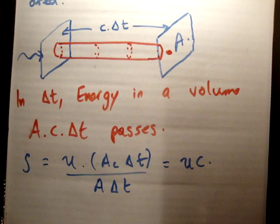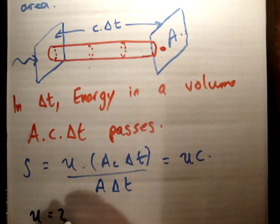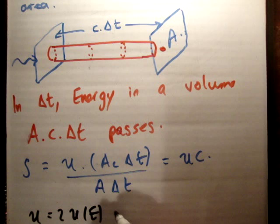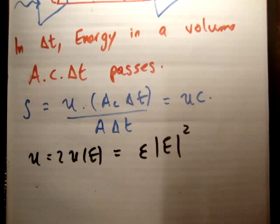Now the next thing is, through a small bit of study, you'll find the following. Now, not on this of course, but I'm talking about study of optics or electromagnetic waves. You'll know that the energy density is equal to twice the energy density of the electric field, and that's equal to epsilon times the magnitude of electric field squared.